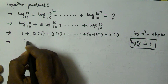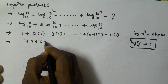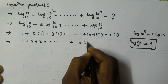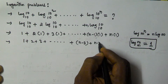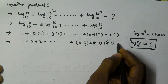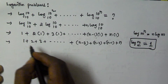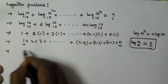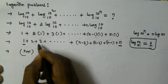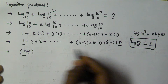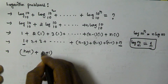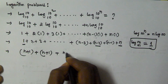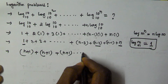The same can be written as 1 plus 2 plus 3 plus and so on plus n minus 3 plus n minus 2 plus n minus 1 plus n. Now, pairing terms: 1 plus n equals n plus 1; 2 plus n minus 1 equals n plus 1; 3 plus n minus 2 equals n plus 1; and so on.